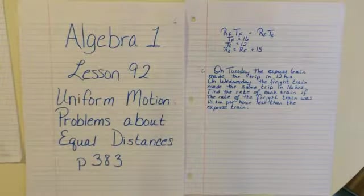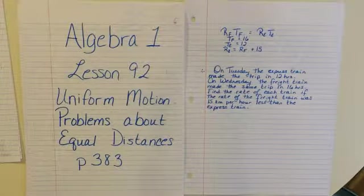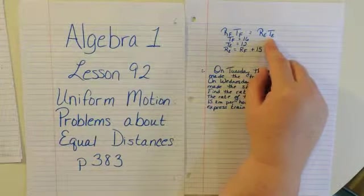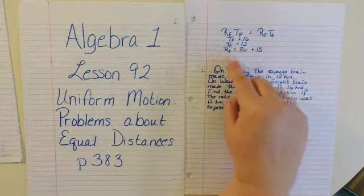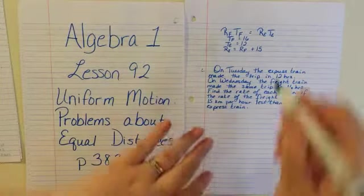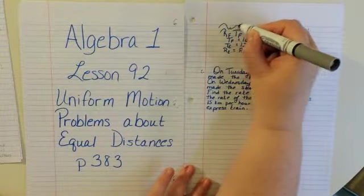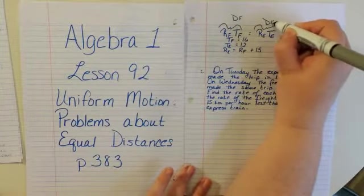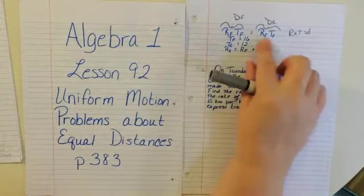Since Lesson 79, we have been using substitution to solve systems of simultaneous equations involving unknowns, such as the rate of F times the time of F equals the rate of E times the time of E. The time of F equals 16, the time of E equals 12, and the rate of E equals the rate of F plus 15. Remember, rate times time equals distance. So whenever we see rate times time, that's actually the distance — the distance F traveled and the distance E traveled.